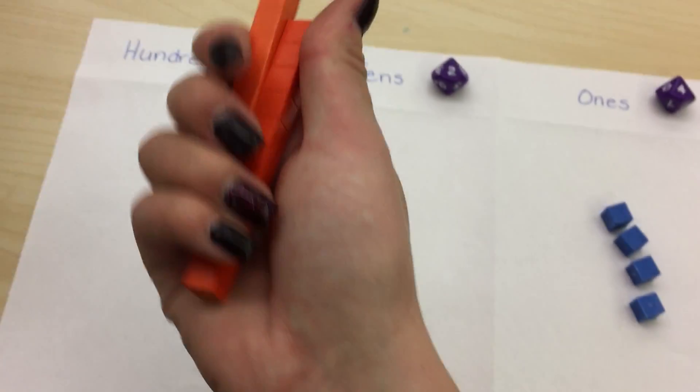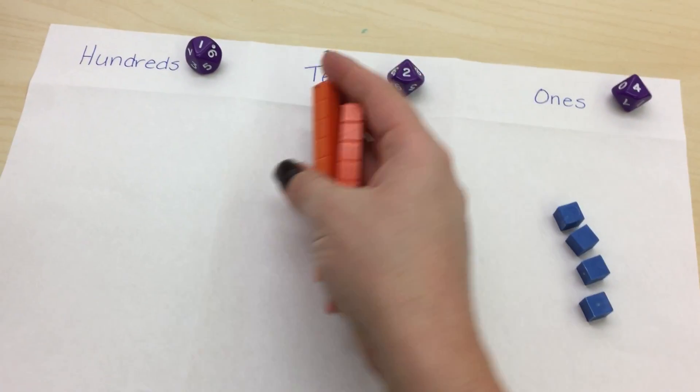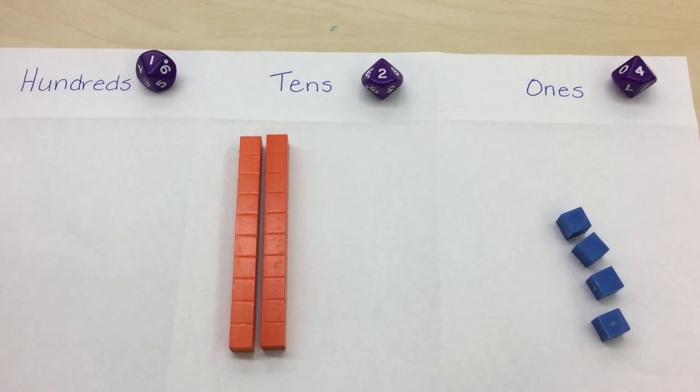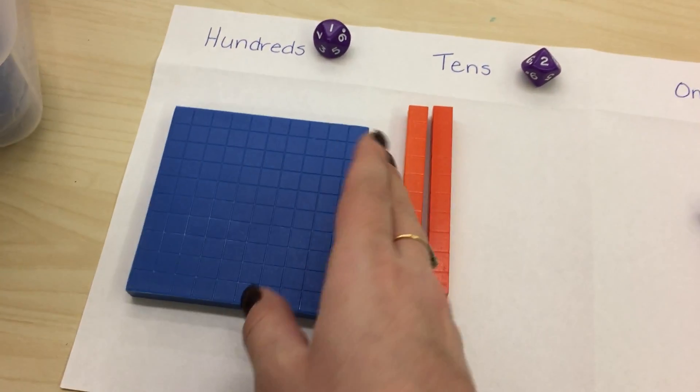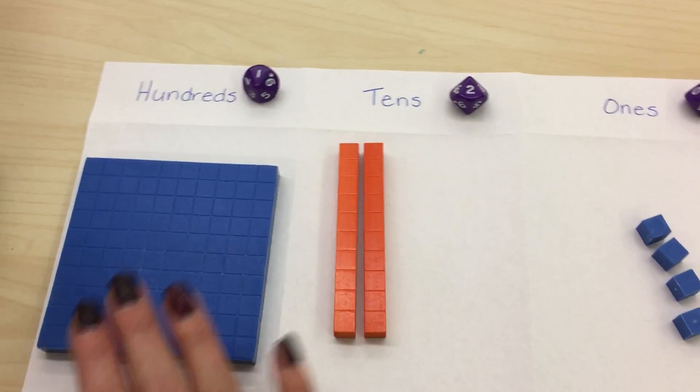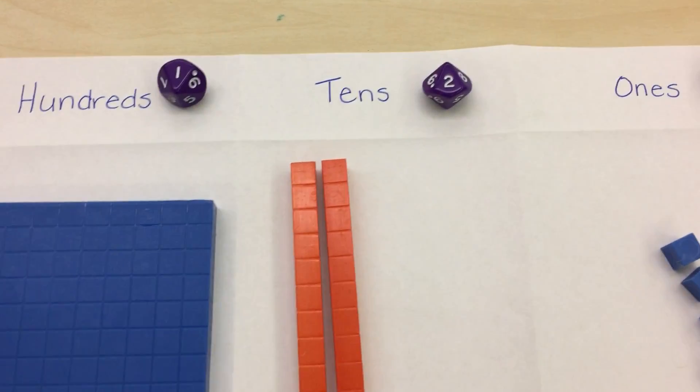My rods represent my tens, so I need two rods to represent my two tens. And my flats represent my hundreds. So I need one flat to represent my one hundred.